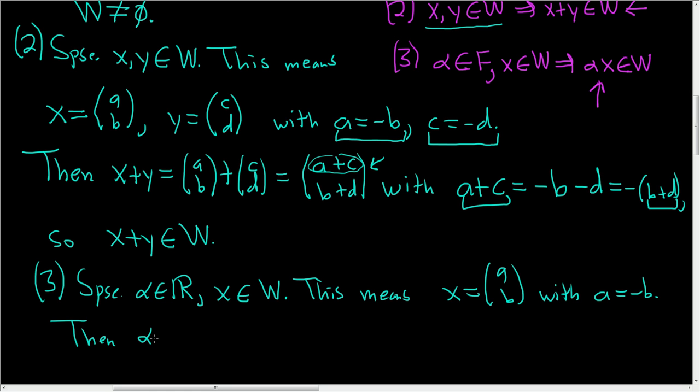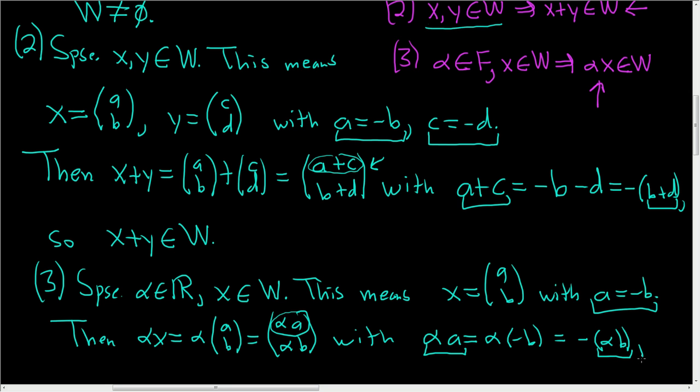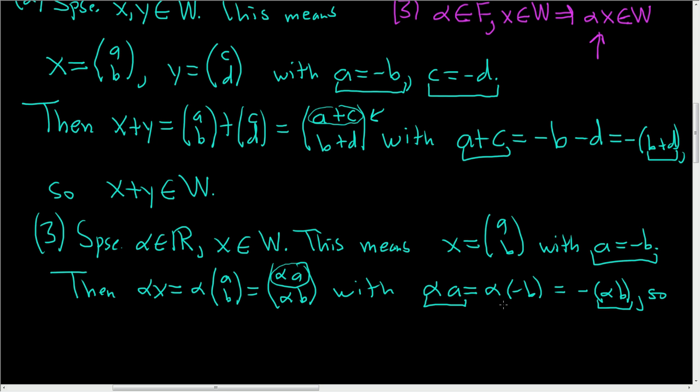Now we have to explain why the vector alpha X is also in W. So then alpha X, well, this is simply alpha times AB. And here we can perform the scalar multiplication. So this is alpha A, alpha B. And now we just have to show that alpha A is equal to the opposite of alpha B. So with, let's write it down and see if it works, alpha A. We can replace A with negative B. So that worked out nicely. So alpha negative B, and then we can write it this way as negative alpha B. Skipping some steps there. So negative alpha B. So alpha A is equal to the opposite of alpha B. These are numbers, so we can do that.